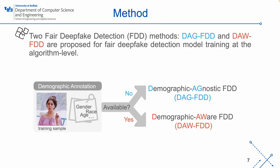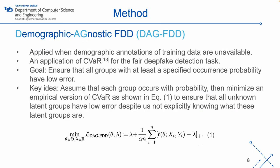Here is an example of demographic annotation of a training identity, describing the gender, age, and race group it belongs to. Unfortunately, most deepfake datasets don't provide such details. Hence, if such annotation is unavailable, we can adopt the proposed DAG-FDD. If we have these annotations, we can utilize the proposed DAW-FDD method. We will delve into the details of these two methods.